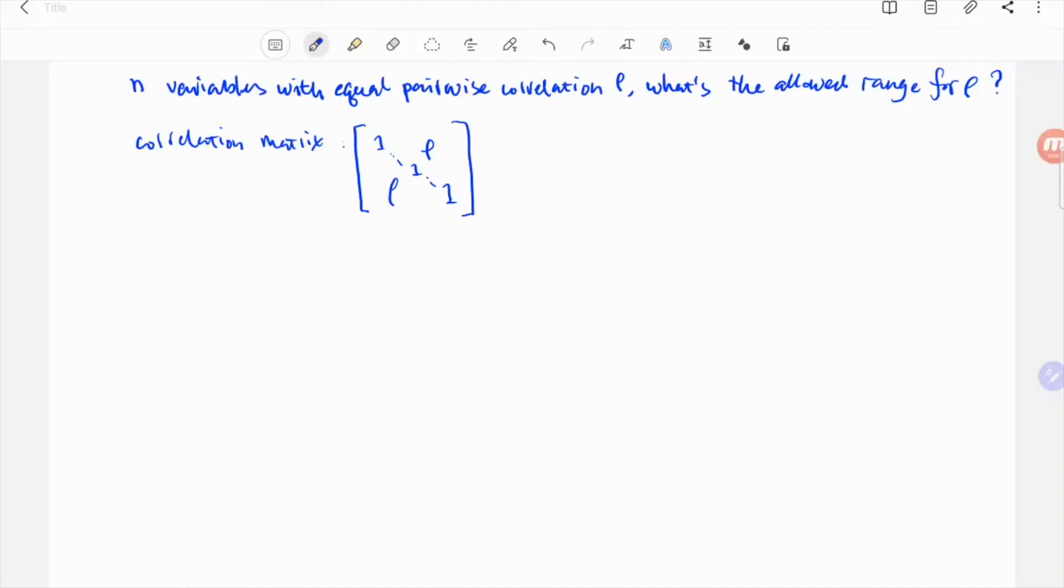Here's an interesting question about correlation matrix. If there are n variables with the same pairwise correlation between each other, say rho, can rho be negative? What is the allowed range of this correlation coefficient?